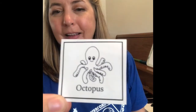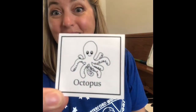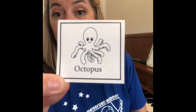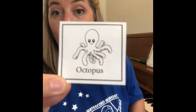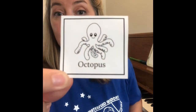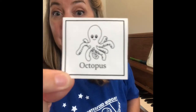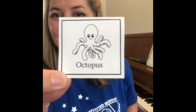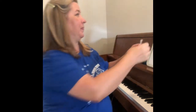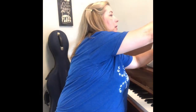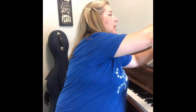Here's another one. What's this animal? Octopus. That's right. Here's how we say it in rhythm. Octopus. Say it with me. Octopus. Clap and say it. Octopus. Good job.